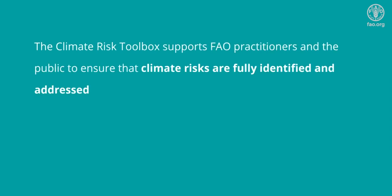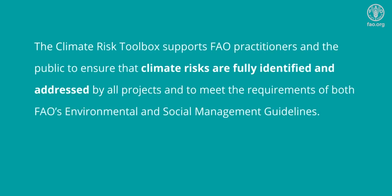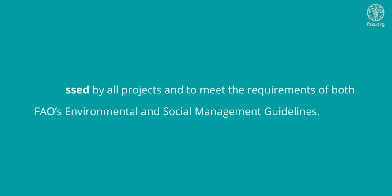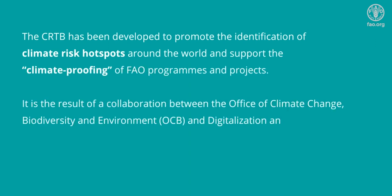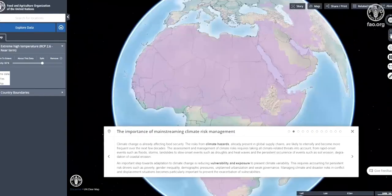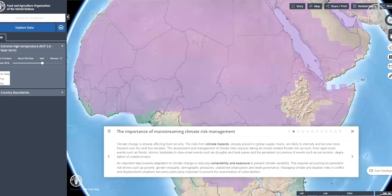The importance of mainstreaming climate risk management. Climate change is already affecting food security, and climate hazards already present in global supply chains are likely to intensify and become more frequent over the next few decades.